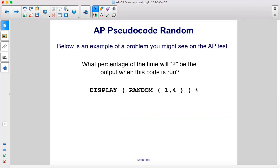Below is an example of a problem you might see on the AP test. What percentage of the time will two be the output when this code is run?